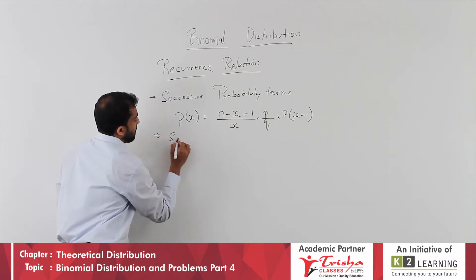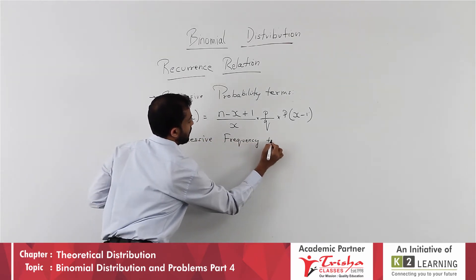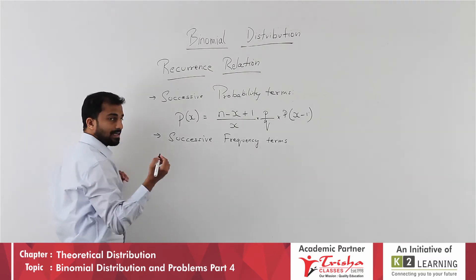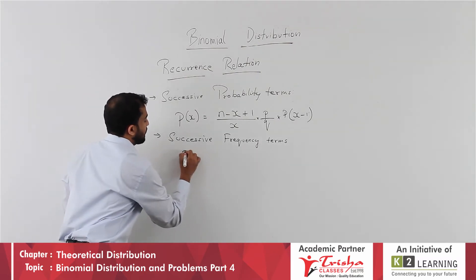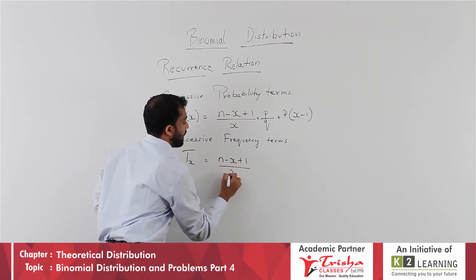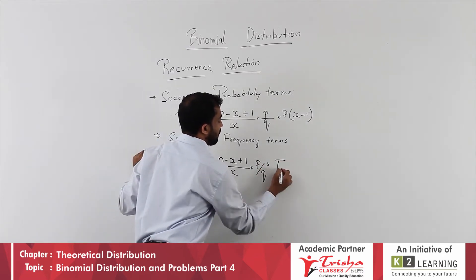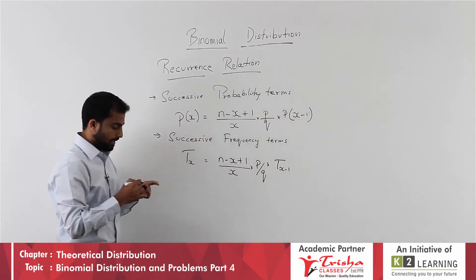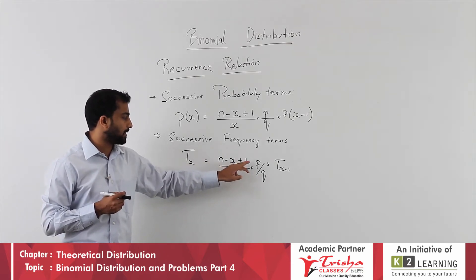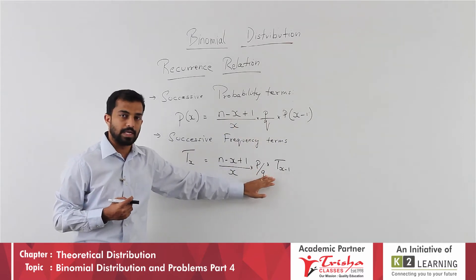For successive frequency terms, also under binomial distribution, the formula is only a slight change: T(x) = [(n − x + 1) / x] × (p/q) × T(x − 1), where T(x−1) is the previous frequency term. The structure is the same — only probability is replaced by frequency.